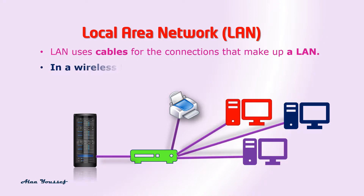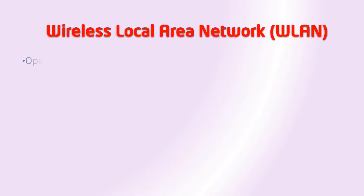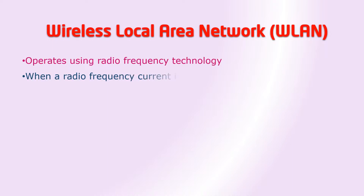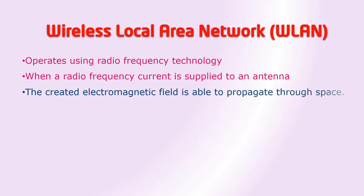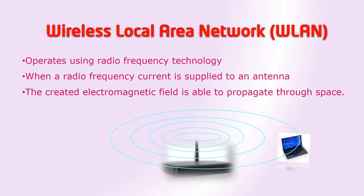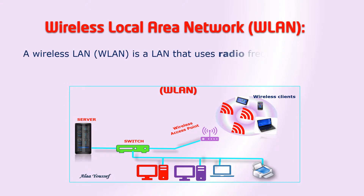In a Wireless Local Area Network, low-power radio frequency is used to connect nodes. A Wireless Local Area Network, WLAN, operates using radio frequency technology. When a radio frequency current is supplied to an antenna, the created electromagnetic field is able to propagate through space. So, a Wireless Local Area Network is a LAN that uses radio frequency technology to connect computers instead of cables.